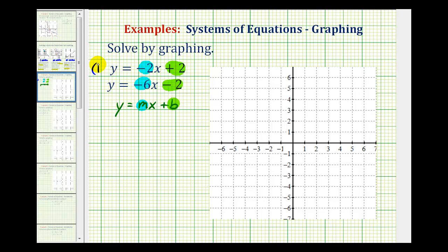Let's graph the first line in blue, and the second line in red. So for the blue line, the slope is equal to negative two. But we'll write that as negative two over one. We always want the slope to be in fraction form, and the Y-intercept would be positive two.